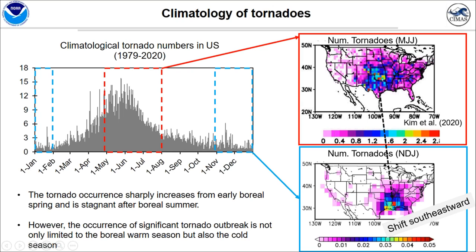This is the same figure as above but for the cold season. Please note that the color scale is much smaller than in the warm season. The main feature of the cold season tornado is the southeast shift of the active tornado area in the cold season compared to the warm season.